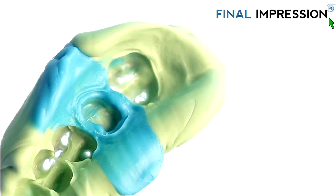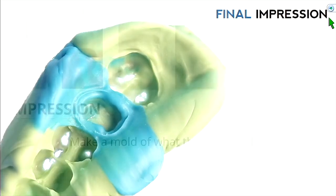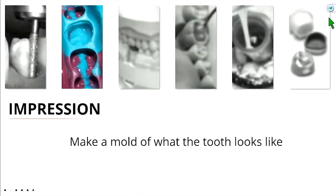Let's talk about step two in this process of making a crown: Impressions. To summarize, the idea is that we want to make a mold of what the tooth looks like. This is helpful because then we can make a crown off of this mold.